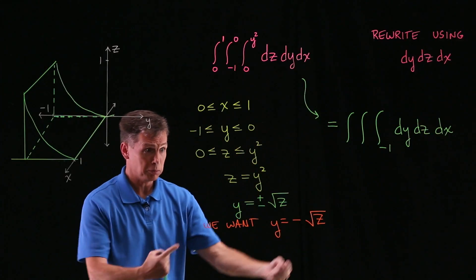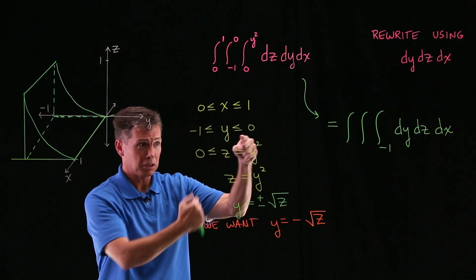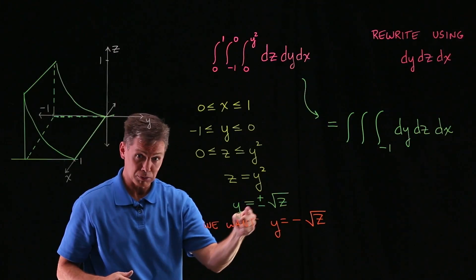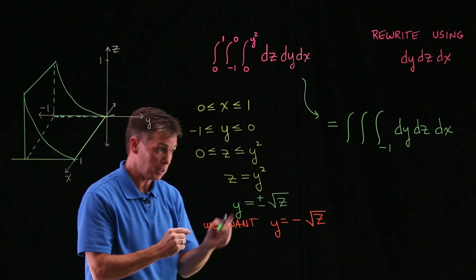But specifically for us, I'm going to write we want, we only want y equals the negative square root of z. How do I know that? It ties back into these inequalities. Remember, we said that y is going to be no bigger than 0. So y can't be the positive version of this square root.